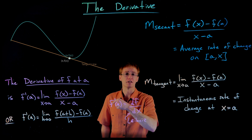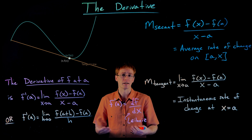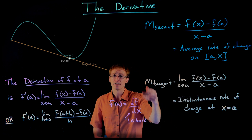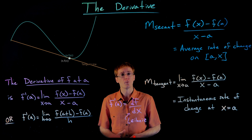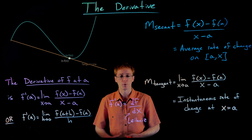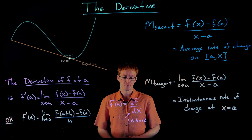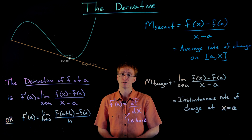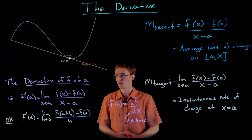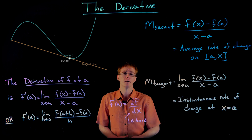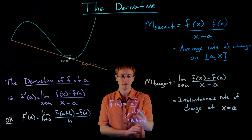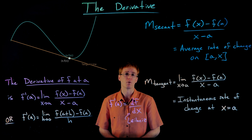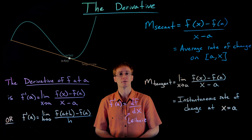That can remind us of the change in f over the change in x, because that's really what the derivative is — it's a slope. We have the change in y or the change in the function over the change in x or the change in the input. Another nice advantage of this Leibniz notation, which isn't going to be a big deal in our class but will be later on, is it tells us what variable we are taking the derivative with respect to. At the moment we're only working with functions of a single variable, so that's not a big deal, but in later math classes you'll look at multi-variable functions. Even in this class, we're going to be changing the variables of our functions, and that'll become important to make sure we know what variable we are taking the derivative with respect to.